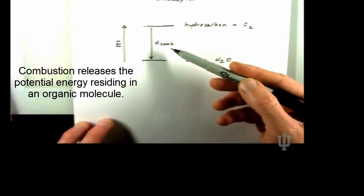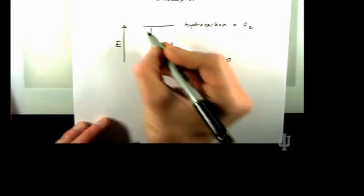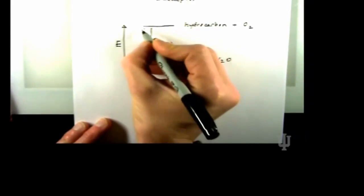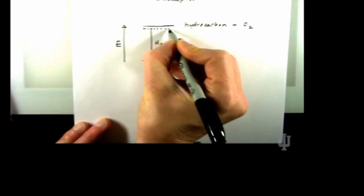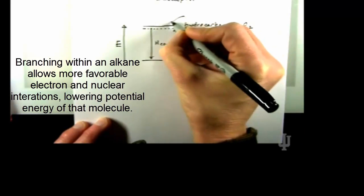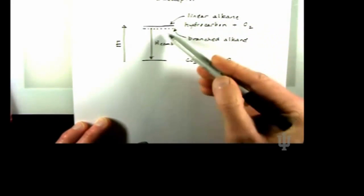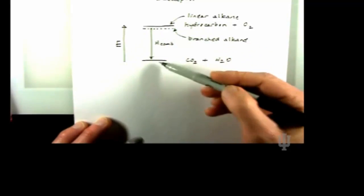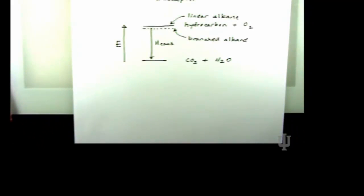If the heat of combustion is smaller for the branched alkane, that means that the branched alkane started off at a lower point. It gave off less heat than the linear alkane did because the branched alkane was more stable in the first place.